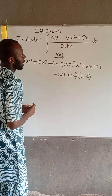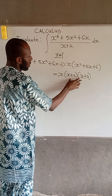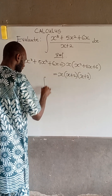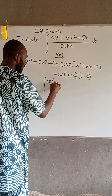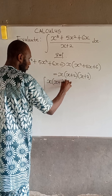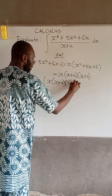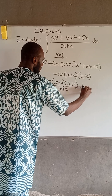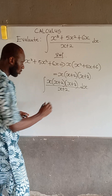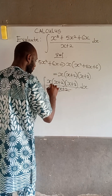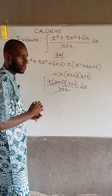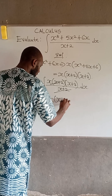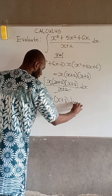Now we are going to replace our numerator with this expression. So we have the integral of x multiplied by x plus 2 multiplied by x plus 3, all divided by x plus 2, dx. The x plus 2 terms cancel out, so we are left with the integral of x times x plus 3, dx.